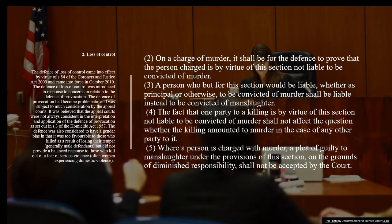Subsection 3 continues: a person who, but for this section, would be liable whether as principal or otherwise to be convicted of murder, shall be liable instead to be convicted of manslaughter. So the defense is a partial defense that only reduces murder to manslaughter. Subsection 4 continues: the fact that one party to a killing is, by virtue of this section, not liable to be convicted of murder shall not affect the question whether the killing amounted to murder in the case of any other party to it.